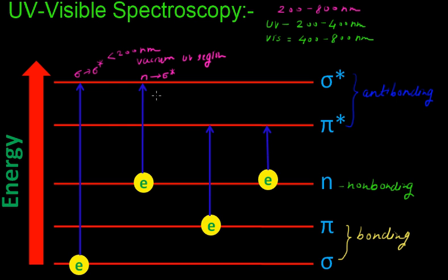We then have pi to pi star transition. Molecules which contain carbon-carbon double bonds or carbon-carbon triple bonds, such as alkenes and alkynes, will show pi to pi star transitions.